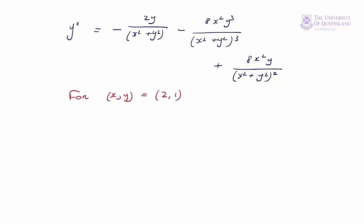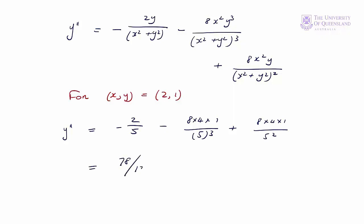We want to evaluate y″ at the point (2, 1). Substituting x = 2 and y = 1: y″ = −2/5 − (8·4·1)/5³ + (8·4·1)/5² . Performing the calculation gives y″ = 78/125.